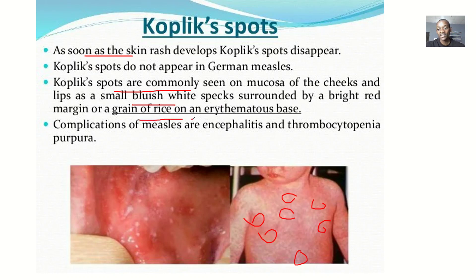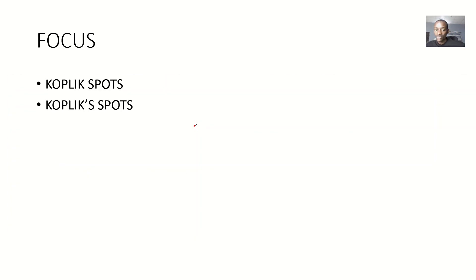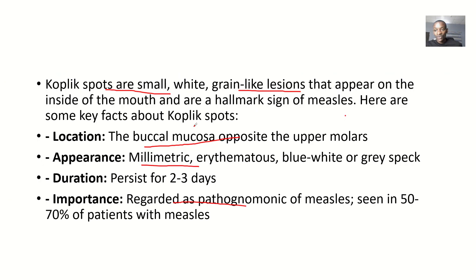Complications of measles include encephalitis and thrombocytopenic purpura. So that's about what we call Koplik spots — their definition and characteristics. That's it, guys.